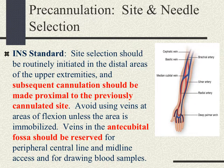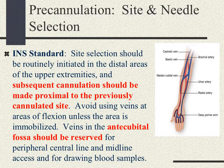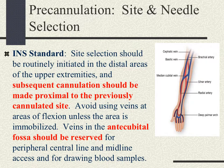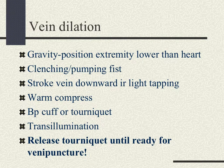Further INS standards state that site selection should routinely be initiated in the distal areas of the upper extremities, and subsequent cannulation should be made proximal to the previously cannulated site. Avoid using veins at areas of flexion unless the area is immobilized. Veins in the antecubital fossa should be reserved for peripheral central line and midline access and for drawing blood samples. You will need to know Table 6-8 and page 326, which talks about vein dilation.